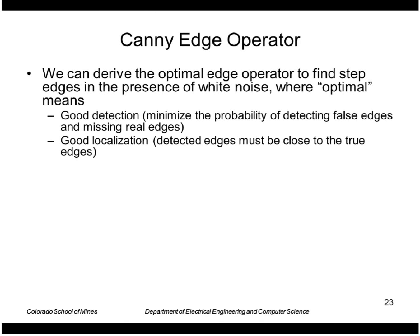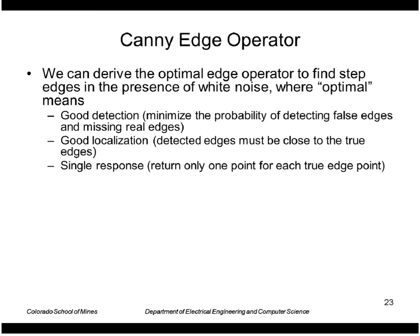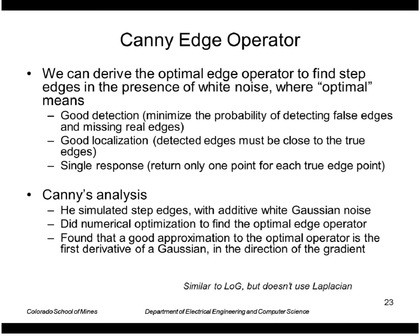Good localization means we want our detected edges to be close to the real edges. And we only want a single response — one point for each true edge point. Canny simulated step edges, added white Gaussian noise, and performed numerical optimization to find the optimal edge operator, which turned out to be very close to the first derivative of a Gaussian.